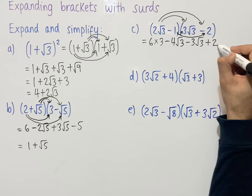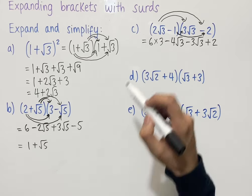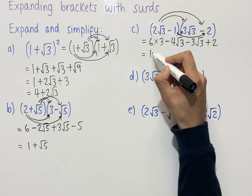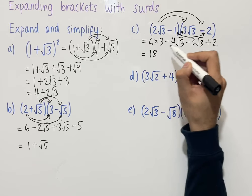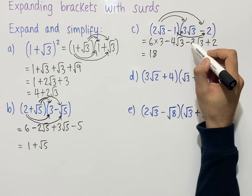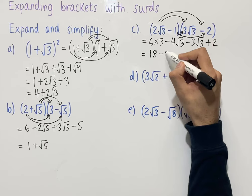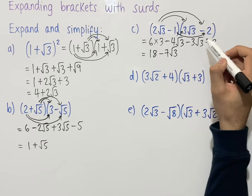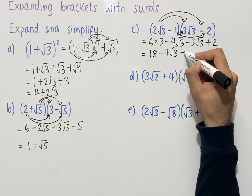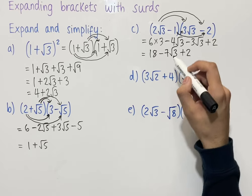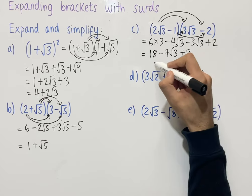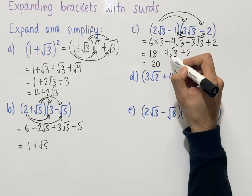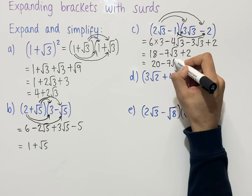Collecting like terms and simplifying: 6 times 3 is 18. Minus 4 root 3 minus 3 root 3 is minus 7 root 3. Then collecting the constant terms, 18 plus 2 is 20. So our final answer is 20 minus 7 root 3.